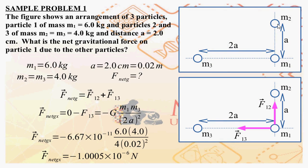You have particle one m1, particle two m2, and particle three m3 arranged as shown. m1 has a mass of 6 kilograms, m2 and m3 have the same mass of 4 kilograms, and distance a is given to be 2 centimeters. The distances are a and 2a. What is the net gravitational force experienced by m1 due to the other two particles?